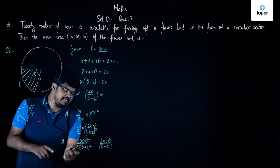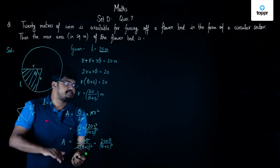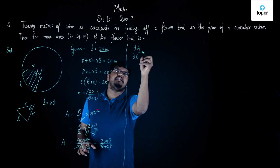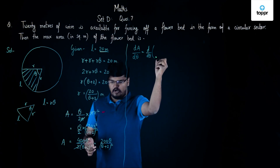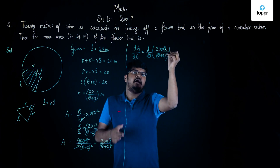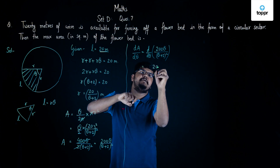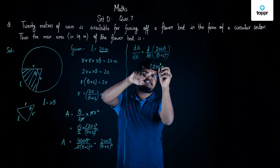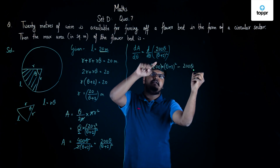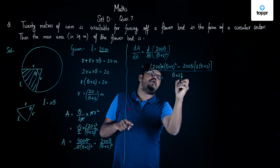We have found the area in terms of θ. To maximize it, we differentiate with respect to θ. We find dA/dθ = d/dθ [200θ / (θ+2)²], applying the quotient rule (d/dx of u/v). This gives us: [200·(θ+2)² − 200θ · 2(θ+2)] / (θ+2)⁴.